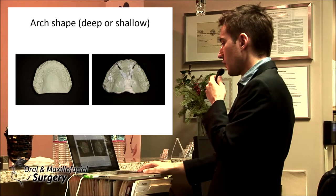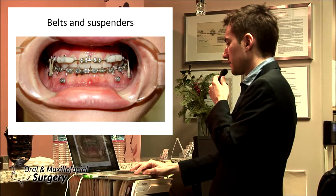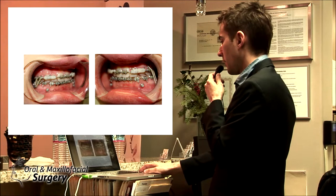This is the bite after. This is belt and suspenders I call them - those are TADs, temporary anchorage devices, and we have elastics, vertical four ounces on each side. This case could easily relapse in your office, so you have to have good friends, orthodontists, and make sure they take care of the case after.